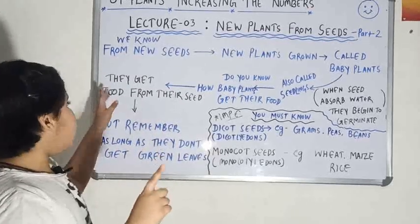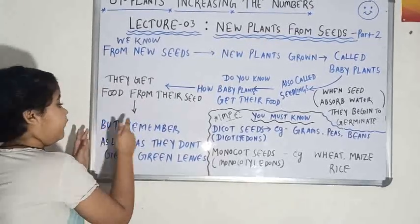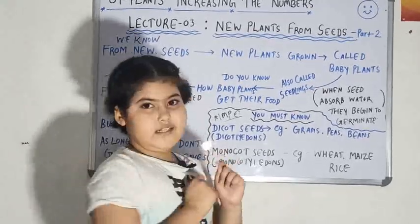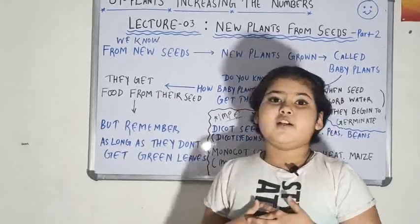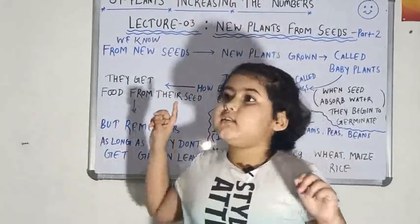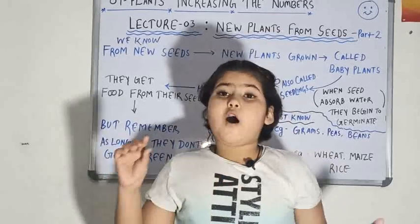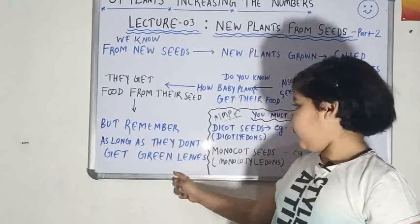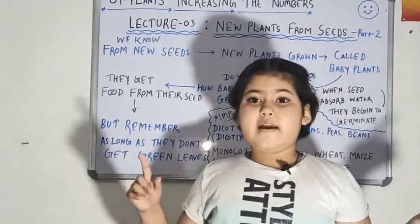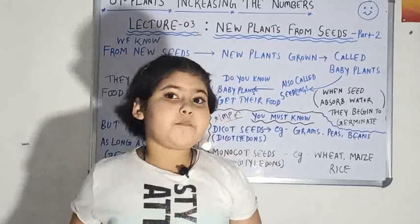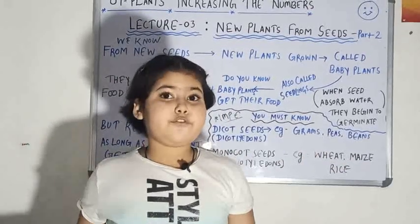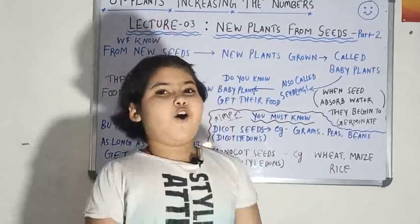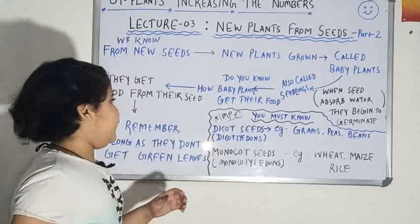And it is very important over here. But remember as long as they don't get green leaves. The particular plant only takes the food from the seed till it is having green leaves. But when the green leaves will grow, it will stop taking the food from the seed. It will take the protein and all the nutrients from the soil.